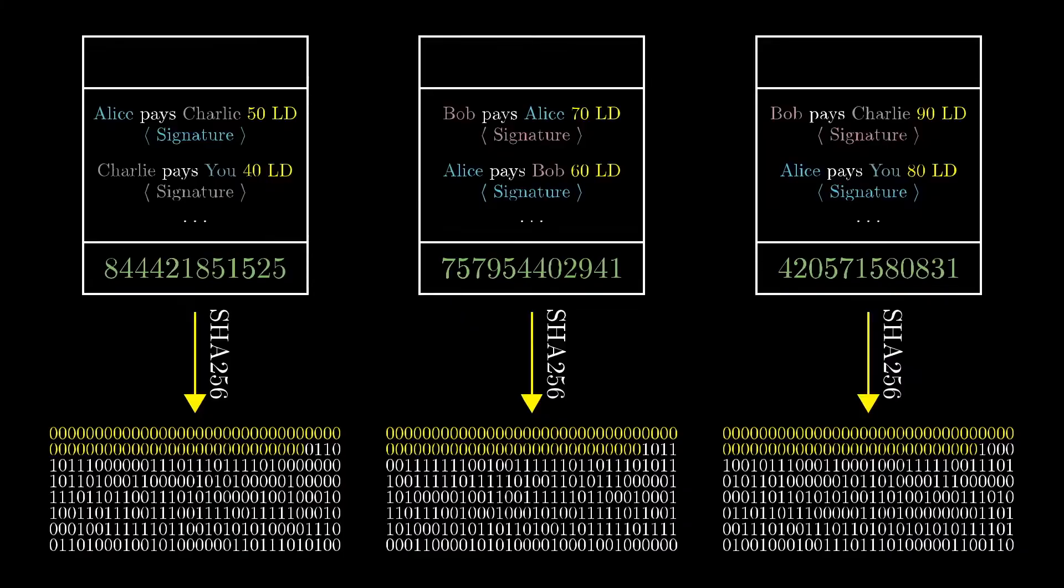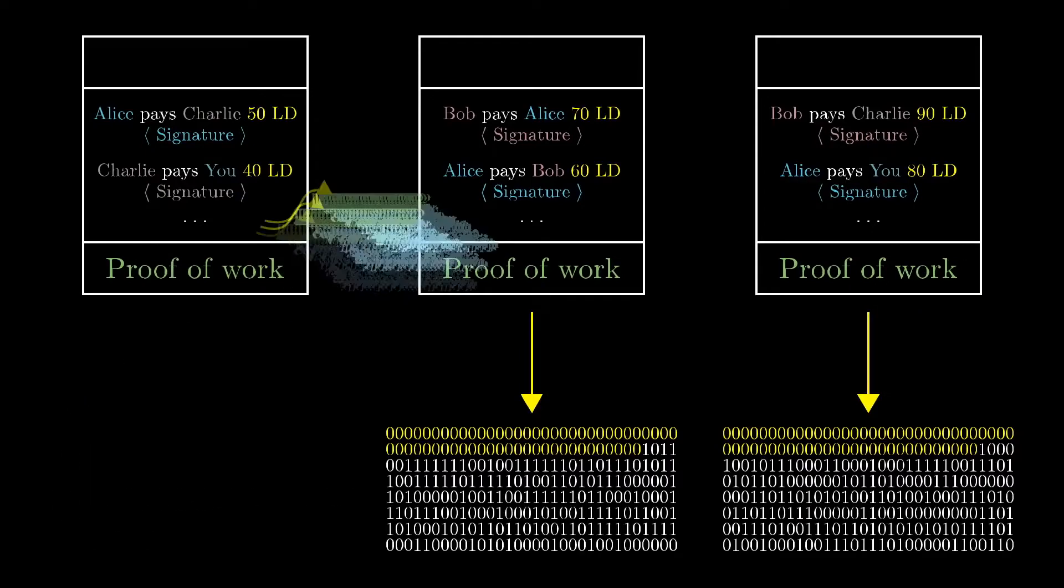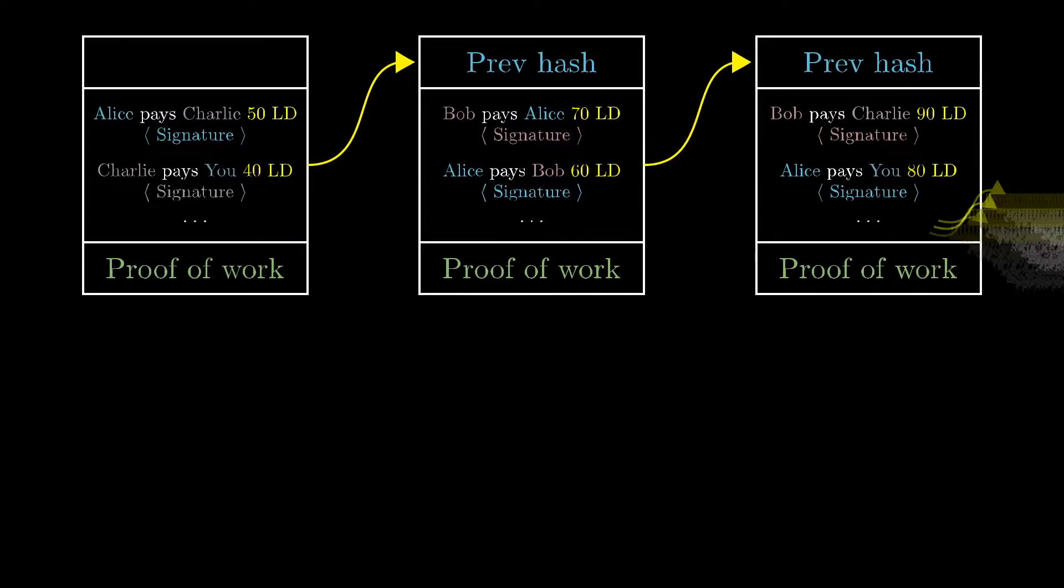In the same way that a transaction is only considered valid when it's signed by the sender, a block is only considered valid if it has a proof of work. And also, to make sure that there's a standard order to these blocks, we'll make it so that a block has to contain the hash of the previous block at its header.